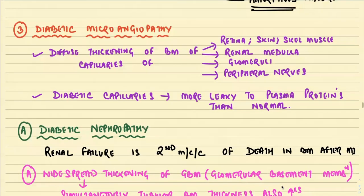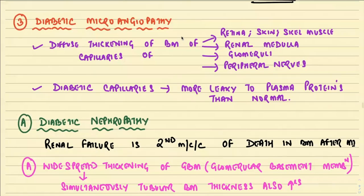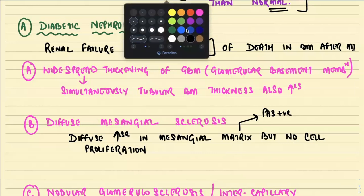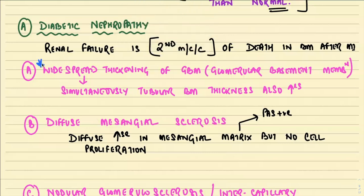In diabetic microangiopathy, there is diffuse thickening of the basement membrane of capillaries in the retina, skin, skeletal muscle, renal medulla, glomerulus, and peripheral nerves. Diabetic capillaries become leaky to plasma proteins, which leak out and deposit in the vessel wall. Regarding diabetic nephropathy — the second most common cause of death after myocardial infarction in diabetes — the first important feature is widespread thickening of the glomerular basement membrane due to excessive deposition of basement membrane material, with simultaneous thickening of the tubular basement membranes as well.